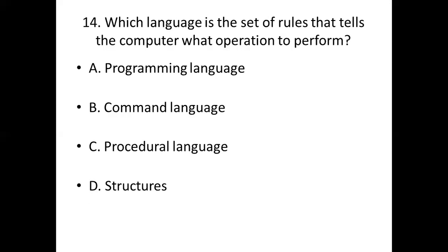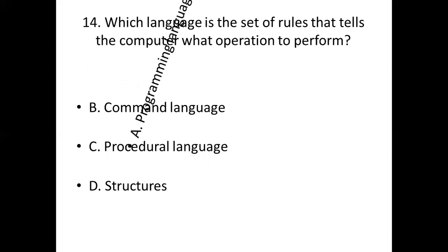Fourteenth bit: Which language is the set of rules that tells the computer what operation to perform? Option A: programming language. Option B: command language. Option C: procedural language. Option D: structures. Answer: Option A — programming language.